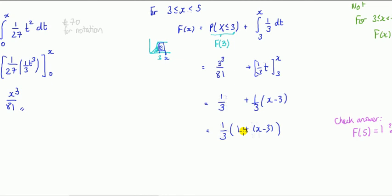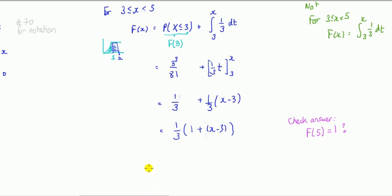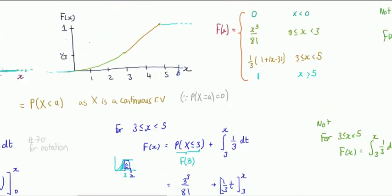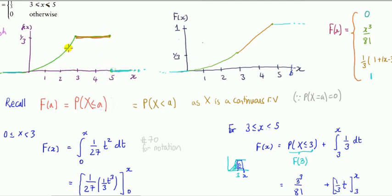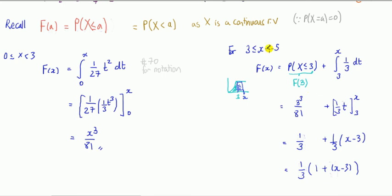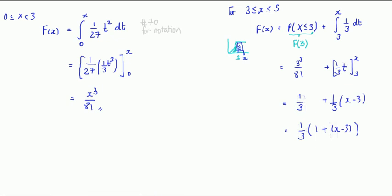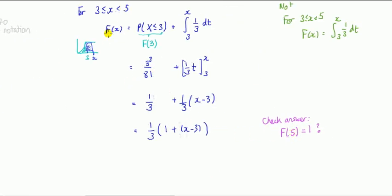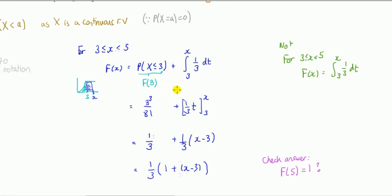I've written it this way — rather than collecting the constant terms — so you can check your answer. You know the total area under the PDF must equal 1, so plugging x = 5 into the second piece must give 1. You can see quite clearly it does. This is a good way to verify your result: substitute the upper limit of the last piece and confirm you get 1.